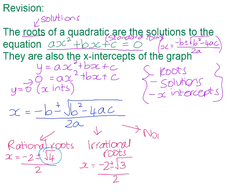Another scenario could be that we get non-real roots. That happens when the square root part of the expression is a negative number — for example, negative 2 plus or minus the square root of negative 3 over 2. We are unable to find the square root of negative 3; it doesn't exist, and that means the roots would be non-real for that equation.